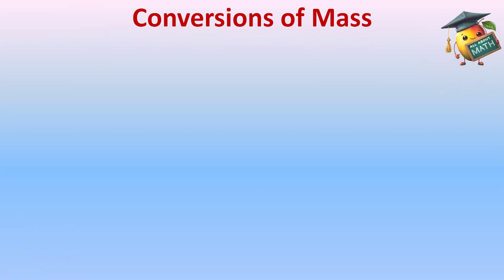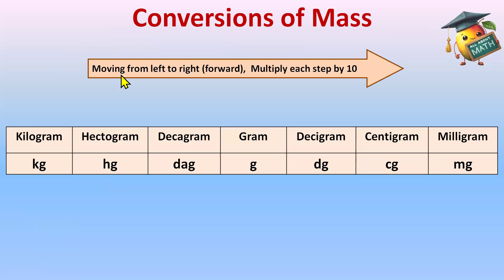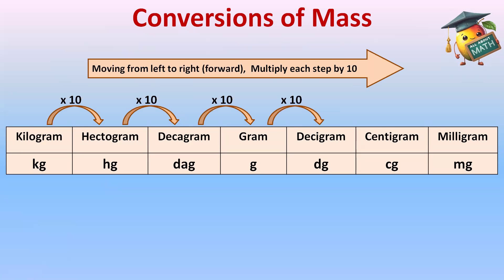Now, how can we do the conversions of mass? For that, first we will make the chart — the unit chart — that is: King Henry died, girl didn't cry much. Moving from left to right, that is forward, multiply each step by 10. So when we are moving from left side to right side, every time we will multiply by 10.